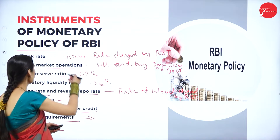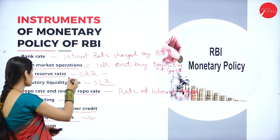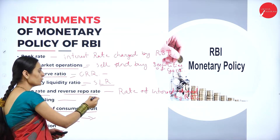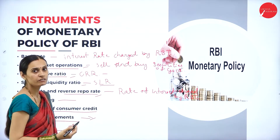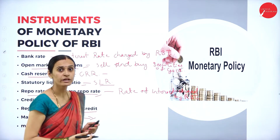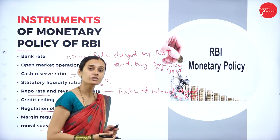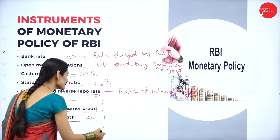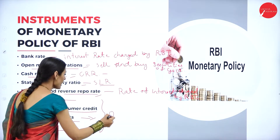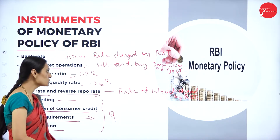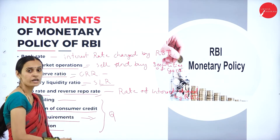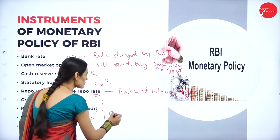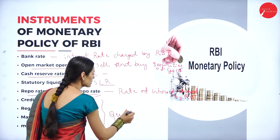So, bank rate, open market operations, cash reserve ratio, statutory liquidity ratio, and repo rate and reverse repo rate belong to quantitative measures. The remaining instruments — credit ceiling, regulations of consumer credit, margin requirements, and moral suasion — belong to qualitative measures.